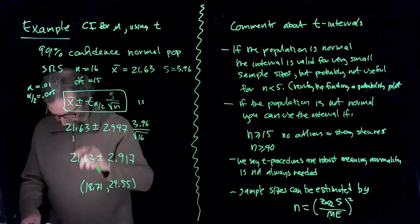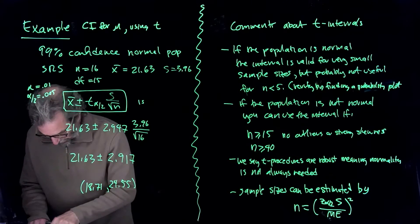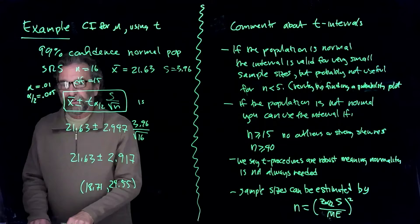So I've got degrees of freedom 15. I slide across here. I'm looking for 0.005.